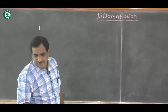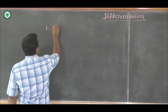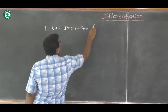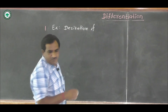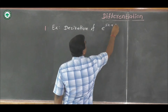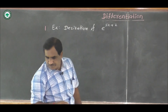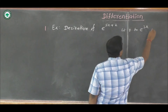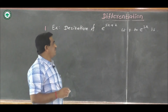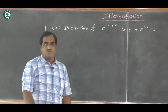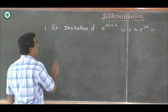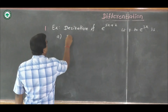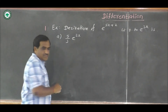The next example is: find the derivative of e raised to (5x plus 2) with respect to e raised to 3x. This is another example of the method of derivative of one function with respect to another function. Options are given: option A is (5 by 3) into e raised to (2x plus 2).